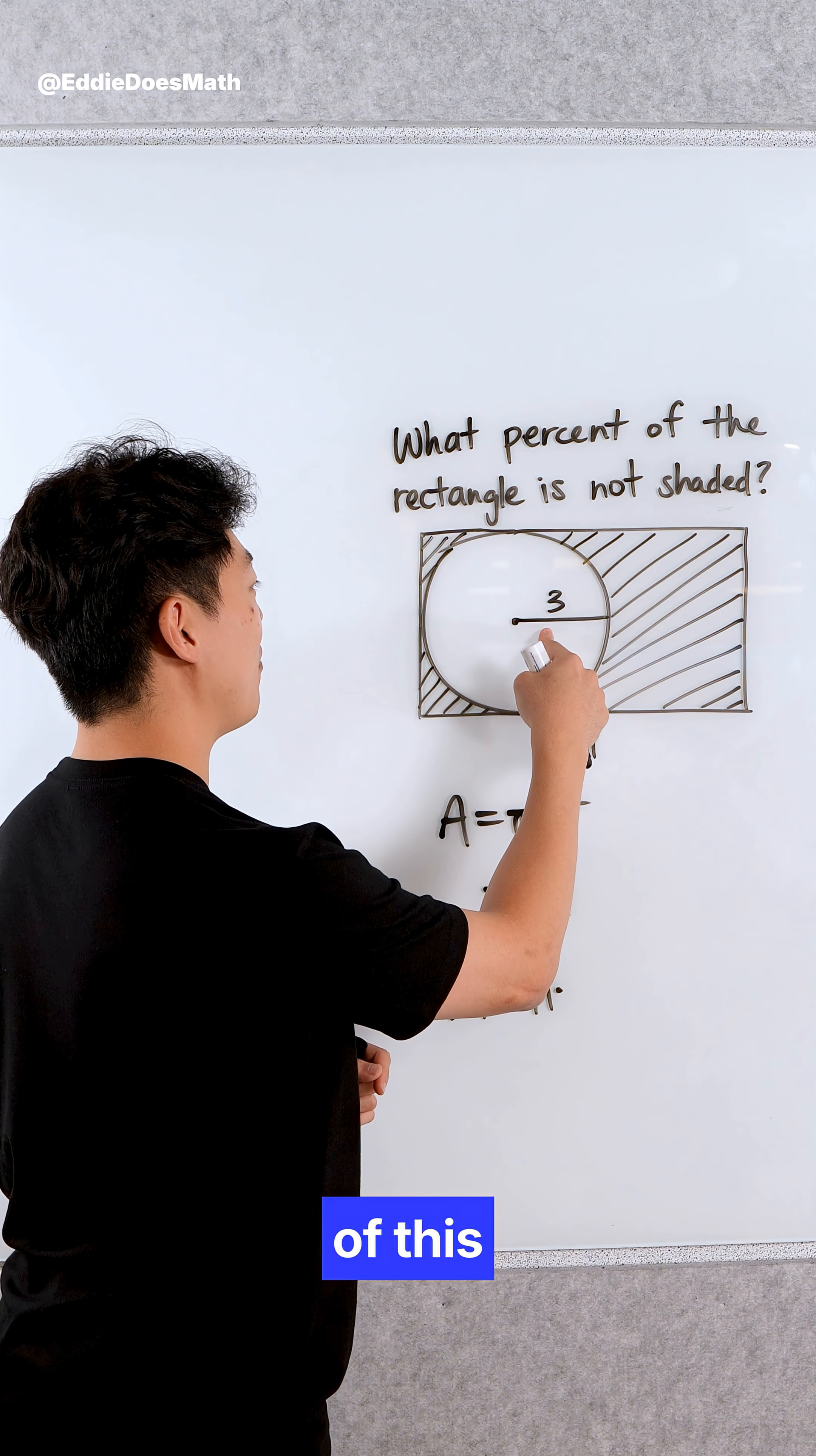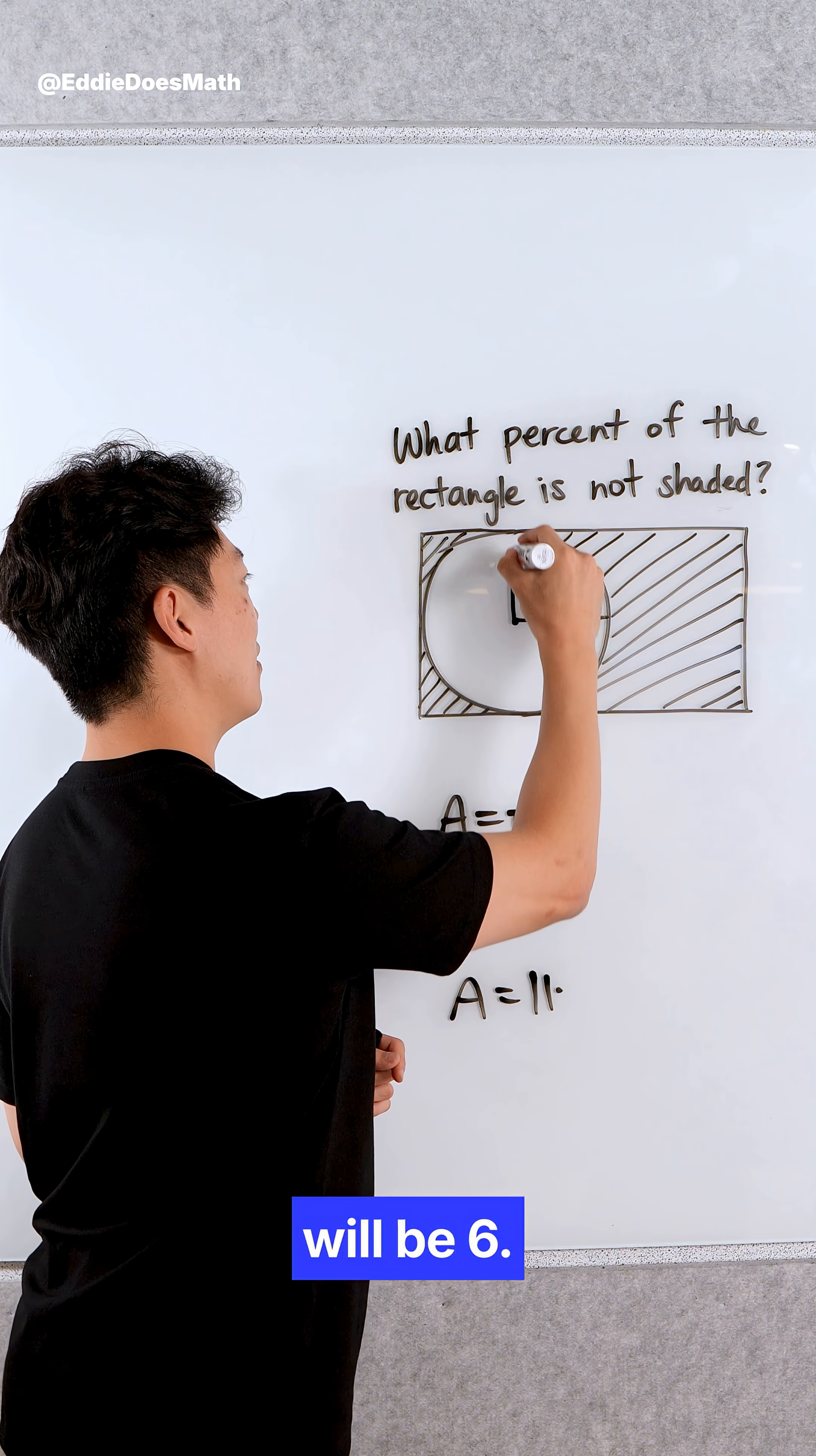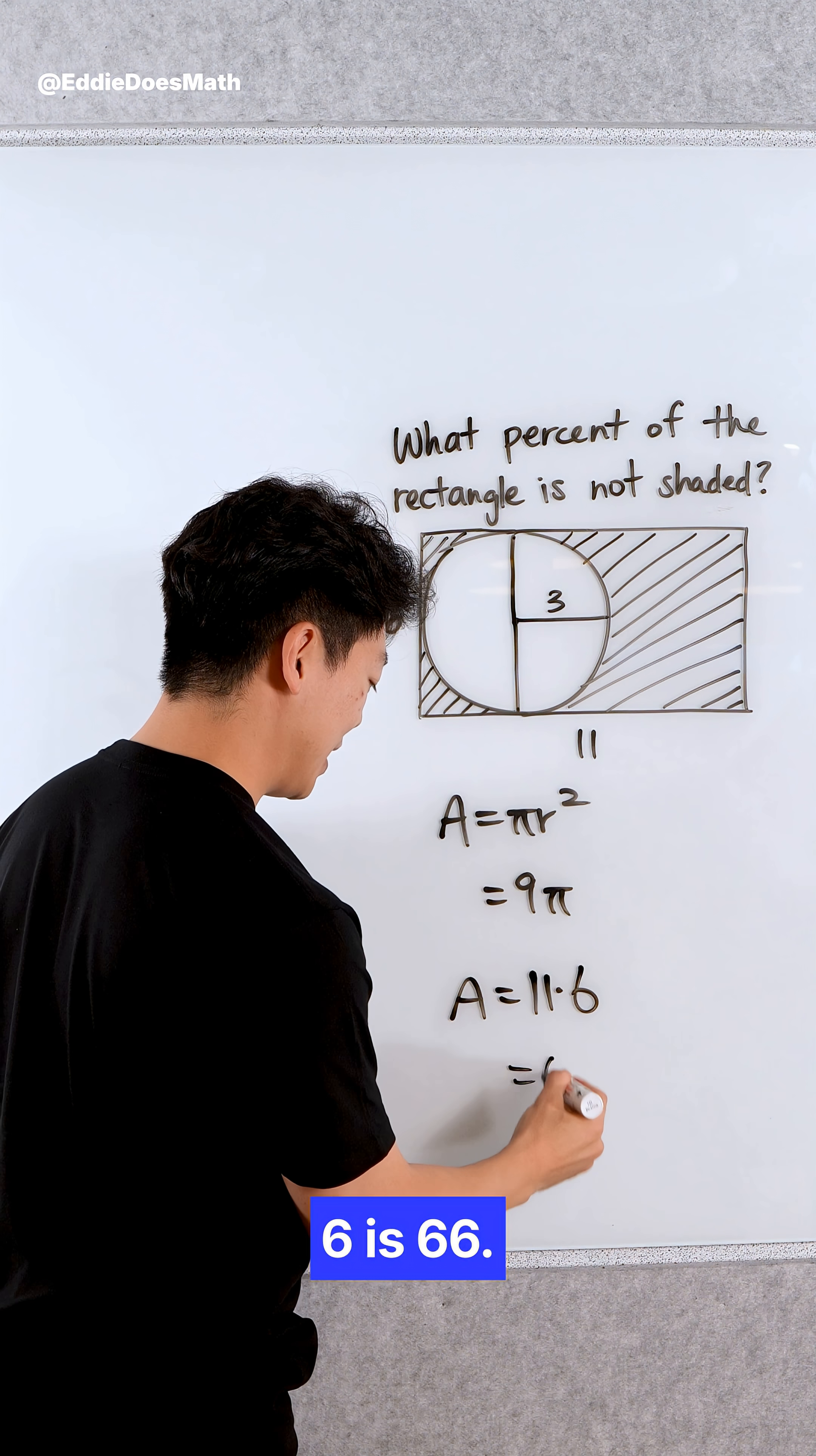We know that the radius of this circle is 3, so the diameter will be 6. 3 and 3 give us 6. 11 times 6 is 66.